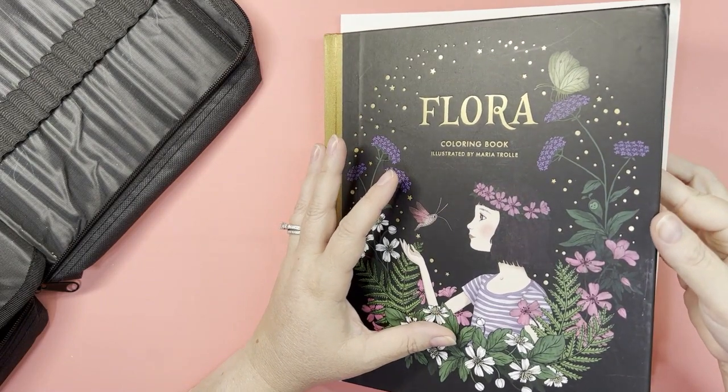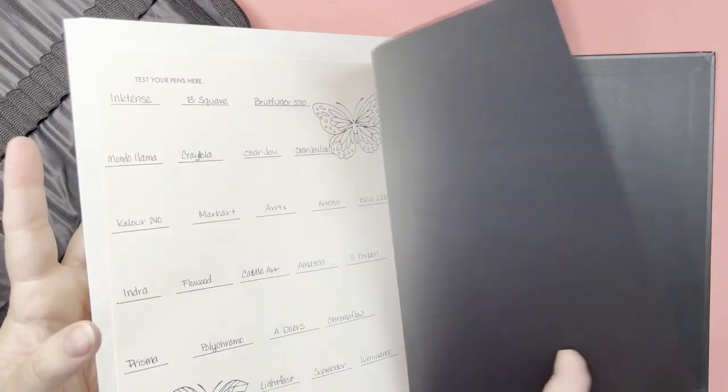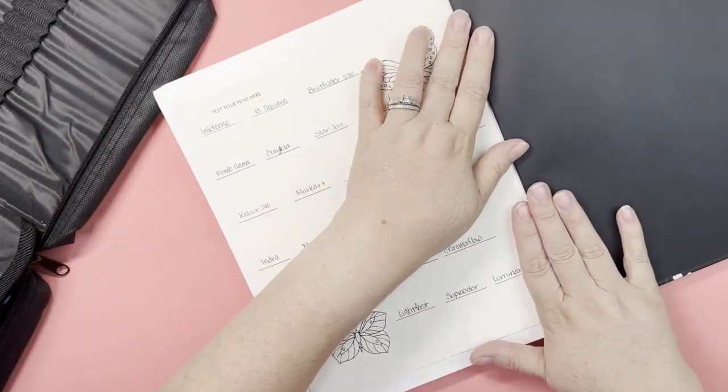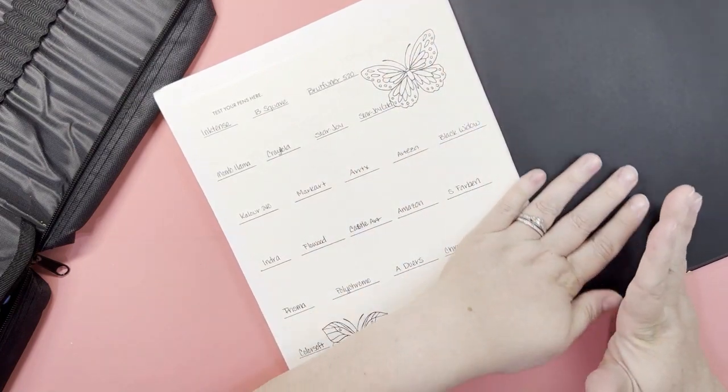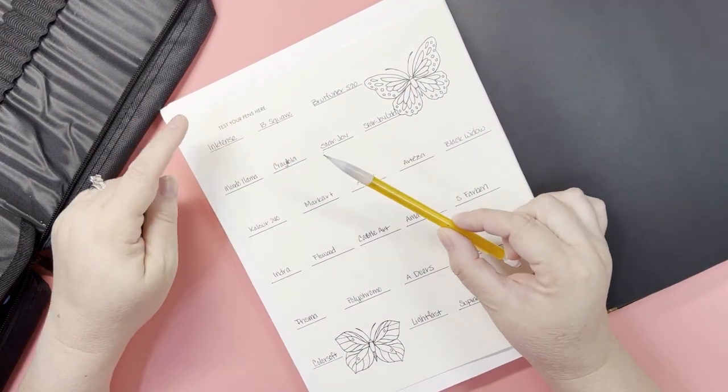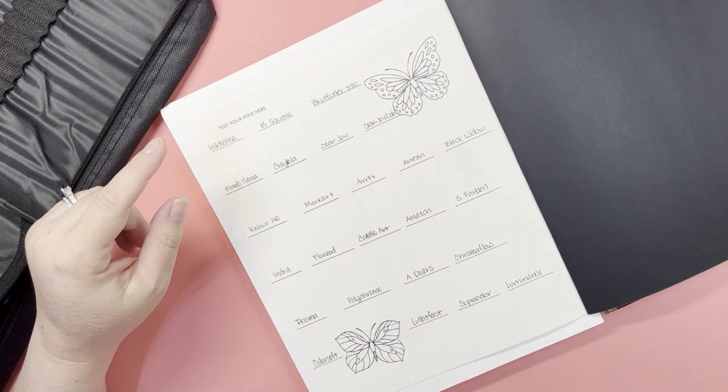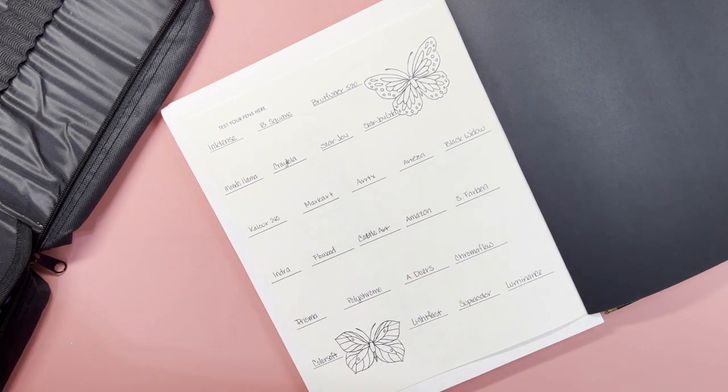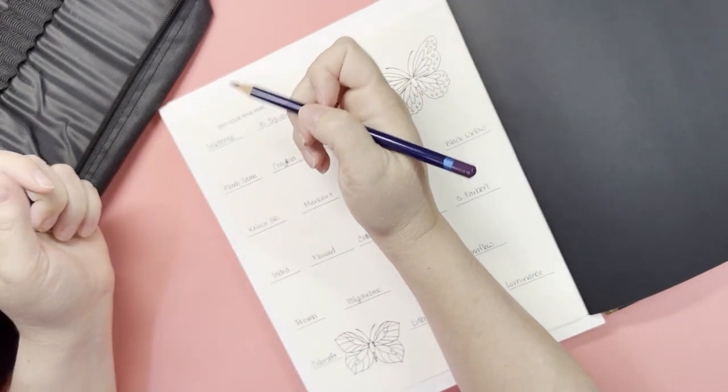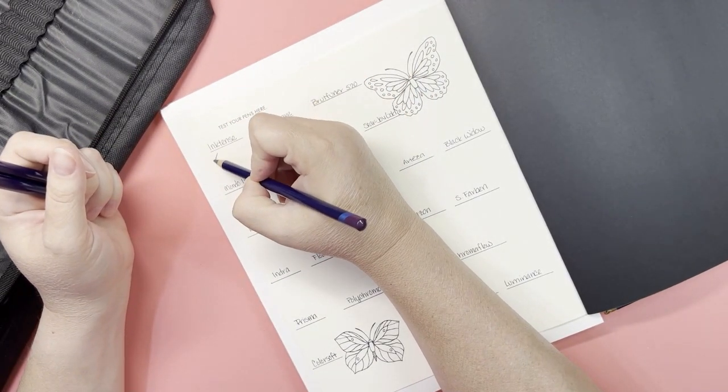In the very back of the Maria Trolle books, there is a test your pens section. Well, we're not testing pens, we're testing pencils. I have a pencil here to write yes or no. We're going to start with Inktense, which I say this every time, I don't know anyone that uses them dry.